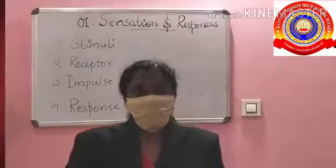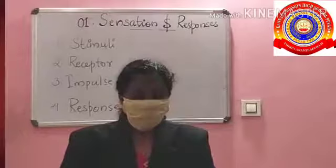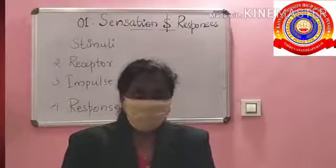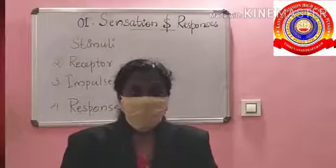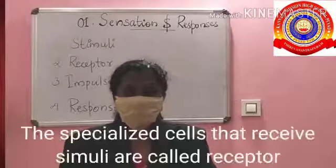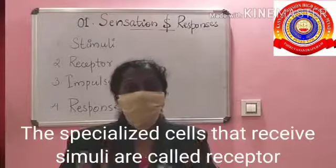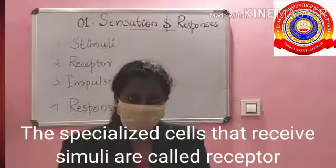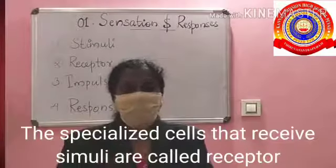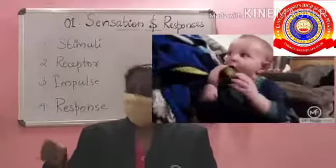In other parts of the body there are also different types of receptors — we can recognize pain, hot, cold, and touch through them. So the receptors are specialized cells in the body to receive stimuli and are called receptors. For example, look at the baby — he's eating a tamarind.